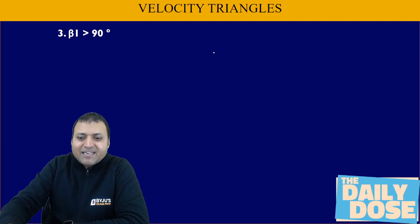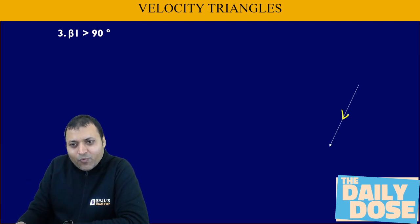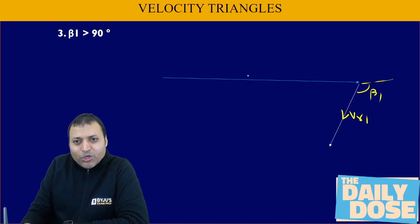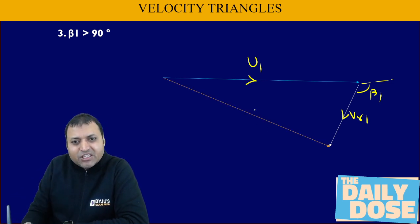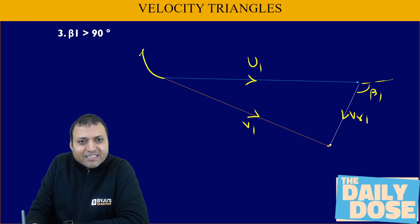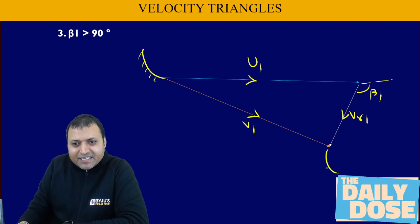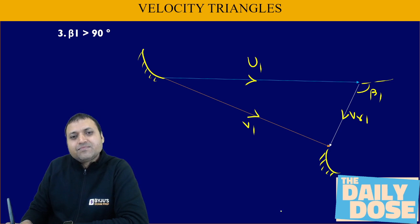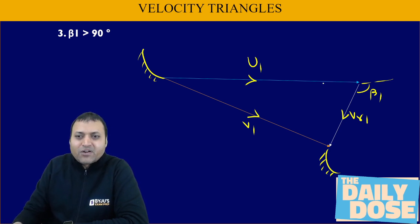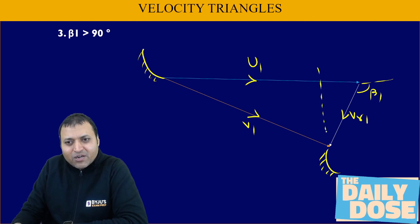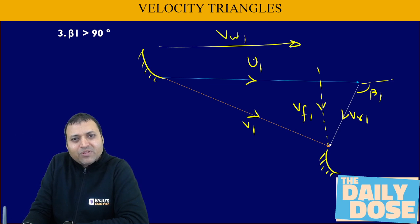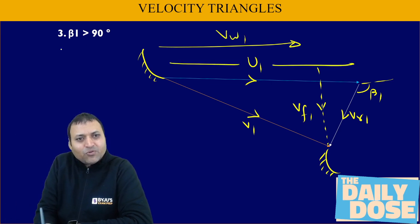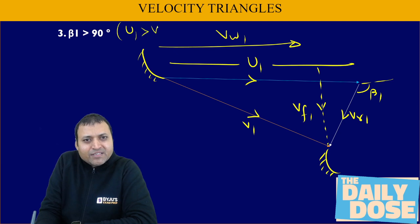When beta 1 is greater than 90°, vr1 tilts such that beta 1 is the angle outside the triangle. u1 is always in the positive x-direction due to the clockwise orientation of the rotor, and the resultant v1 is the tangent to the guide vane. Resolving v1 into two components gives vf1 and vw1. Here u1 extends beyond vw1, so for beta 1 greater than 90° we can say u1 is greater than vw1.